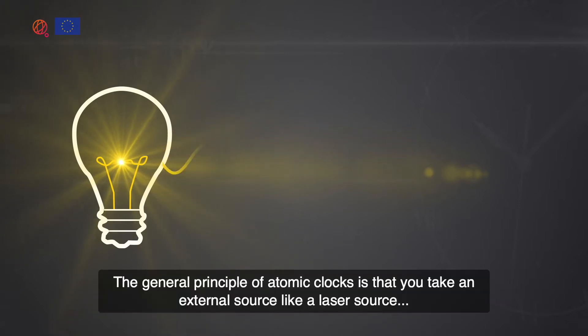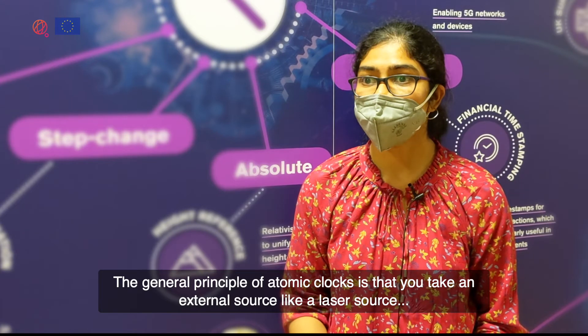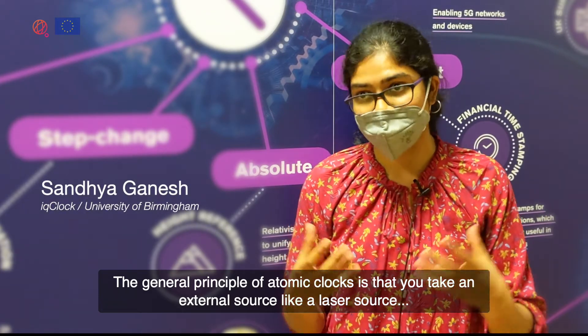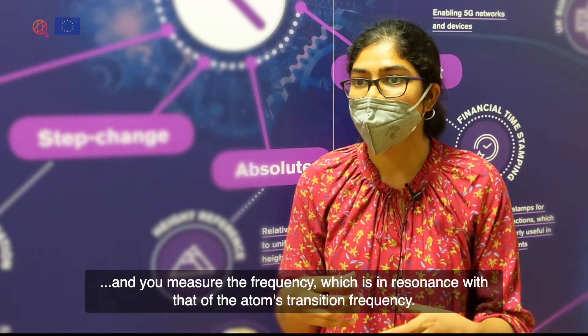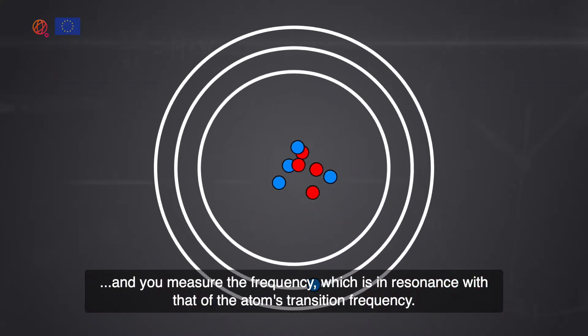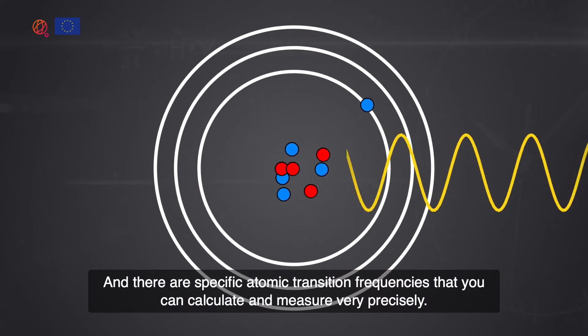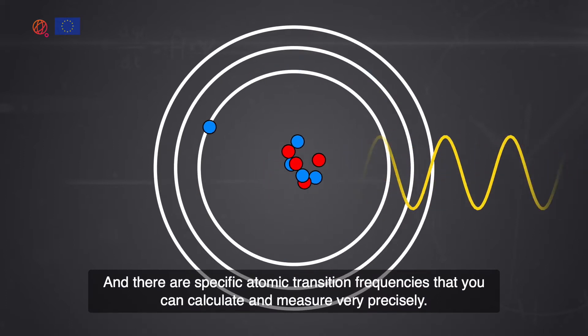The general principle of atomic clocks is that you take an external source, like a laser source, and you measure the frequency which is in resonance with that of the atom's transition frequency. There are specific atomic transition frequencies that you can calculate and measure very precisely.